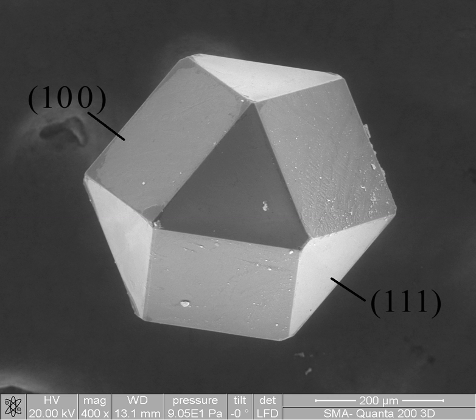Microstructure is defined as the structure of a prepared surface or thin foil of material as revealed by a microscope above 25 times magnification. It deals with objects from 100 nanometers to a few cm.